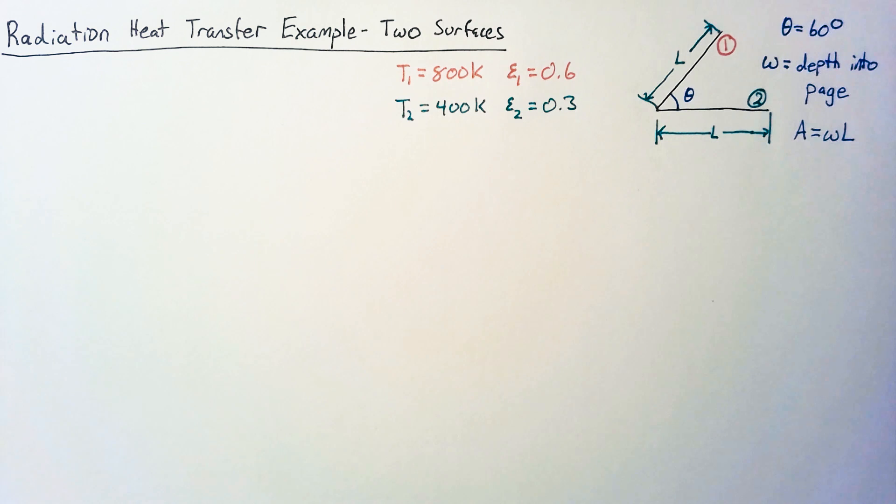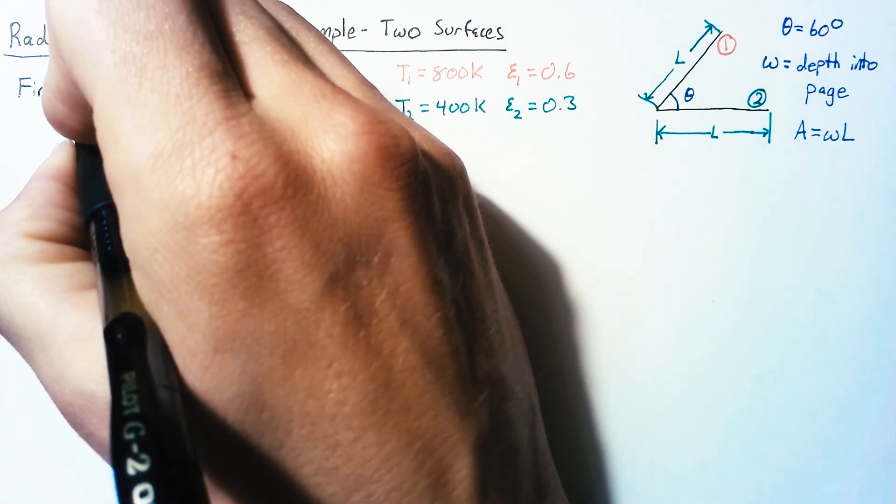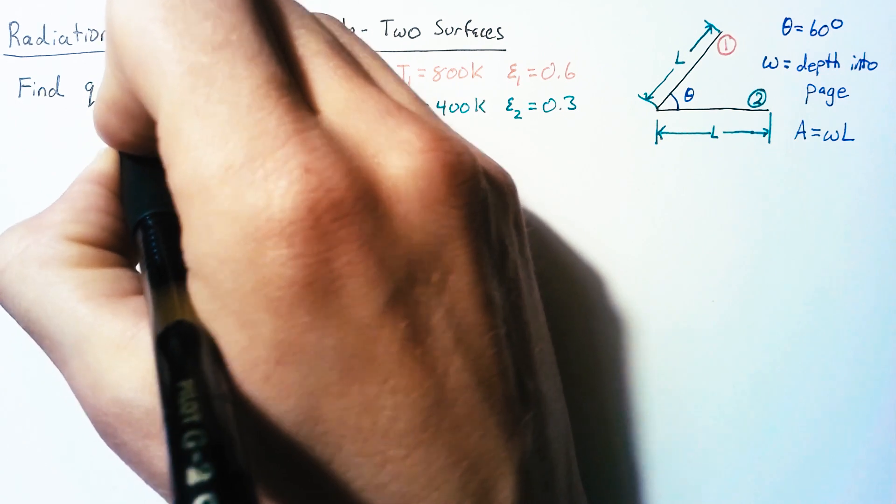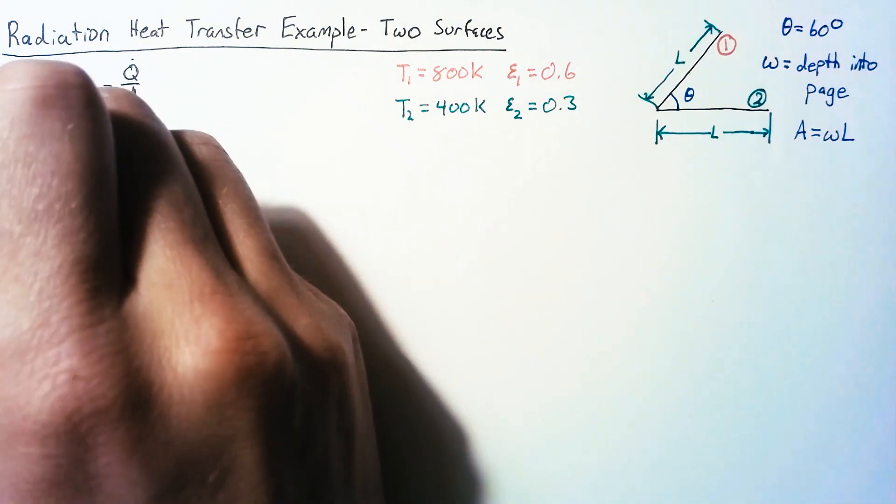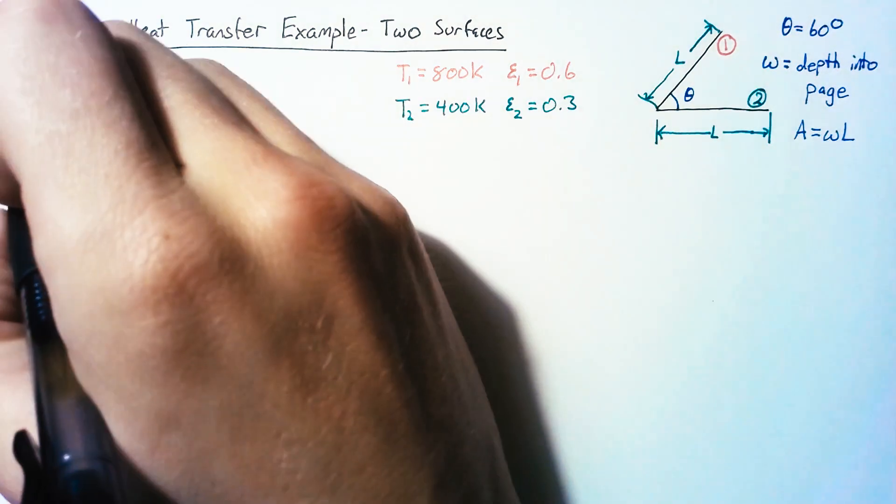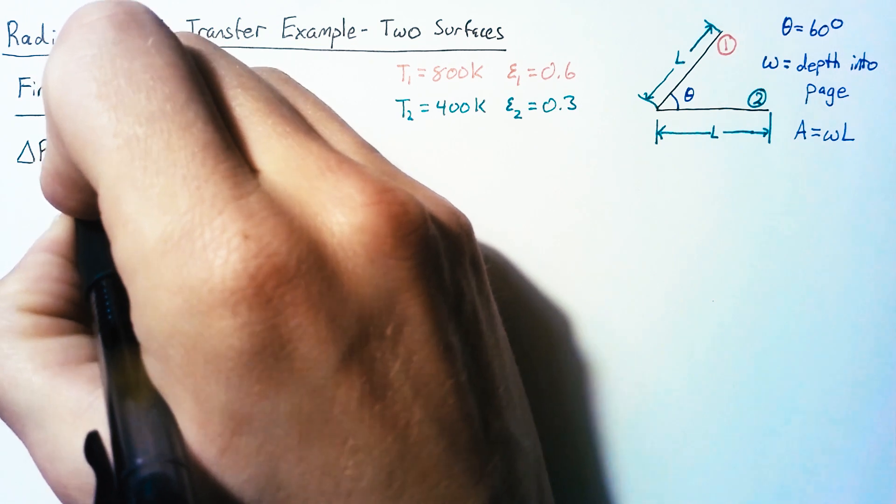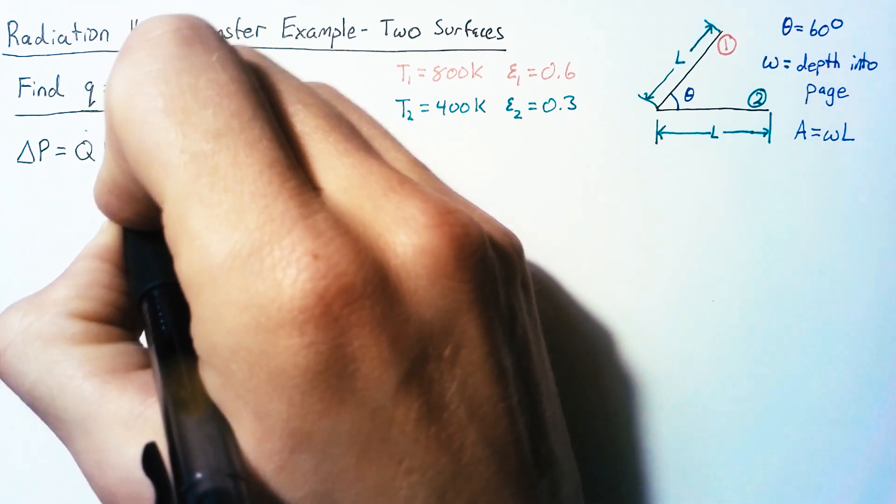What we're trying to do with this problem is find our heat flux, which is simply the total heat flow per unit area. To start off, we're going to be using the circuits analogy, and what we say with that is that the change in potential is going to be equal to our Q dot multiplied by the total resistance.